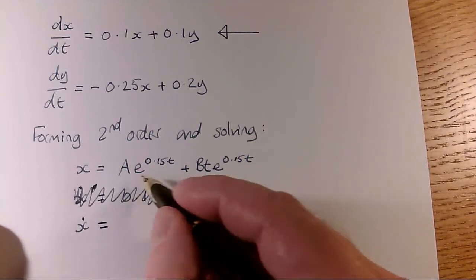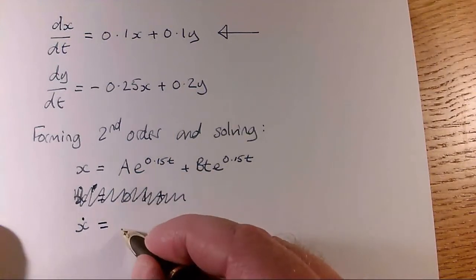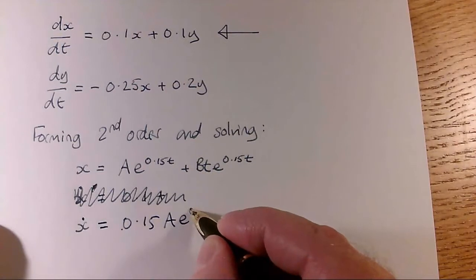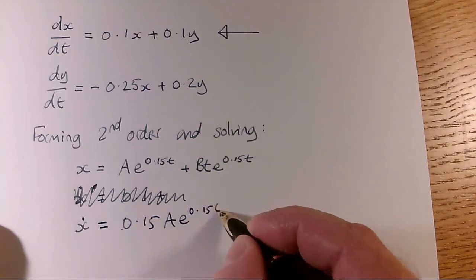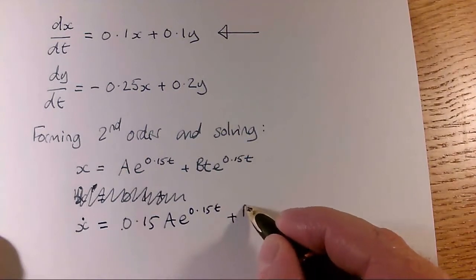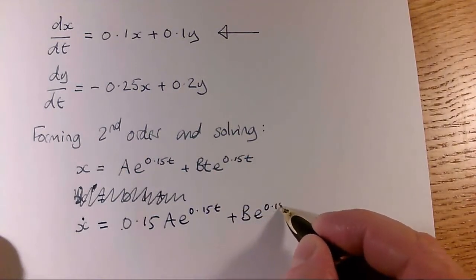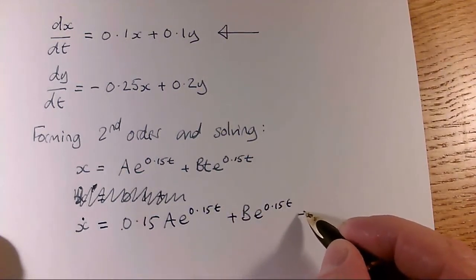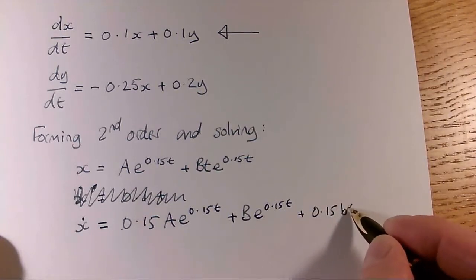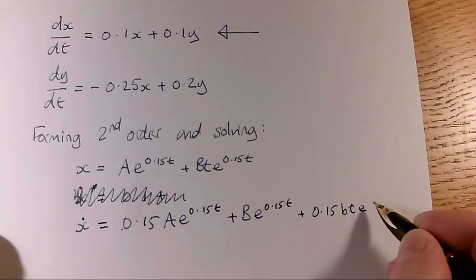So, differentiate what we see, and that is going to be, the first term just differentiates to 0.15a e to the 0.15t, and differentiate this bit of product rule going on. So, we get b times e to the 0.15t, plus 0.15bt e to the, that should be capital B, e to the 0.15t.